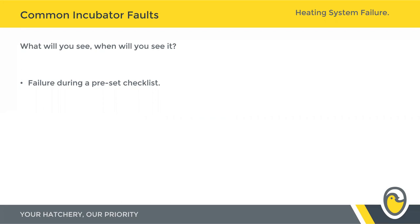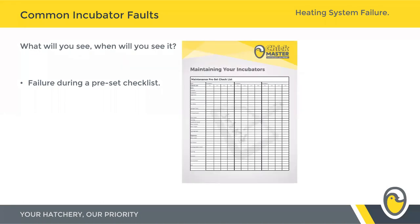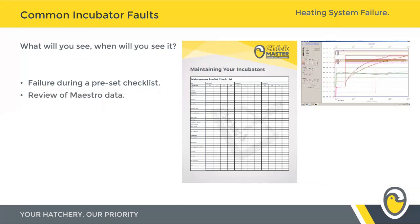Ideally we'd see this during a preset checklist. A preset checklist is something I try to bring up in every single Tech Tuesday. We recommend them highly because it gives you the opportunity, before eggs go into an incubator, to verify that every mechanical function on that machine is working as intended. The second most common way to spot an error is by reviewing the Maestro data — though nine times out of ten, the Maestro information is seen retroactively once you're already aware of a chick quality problem.